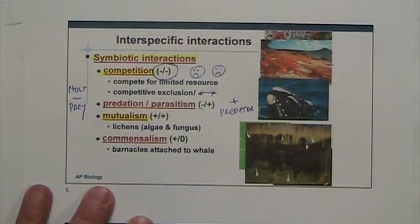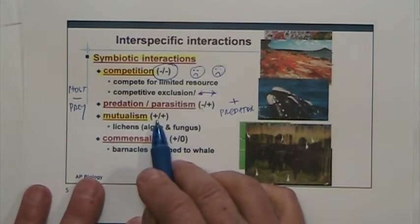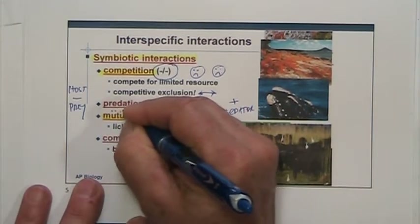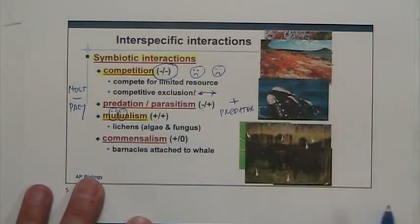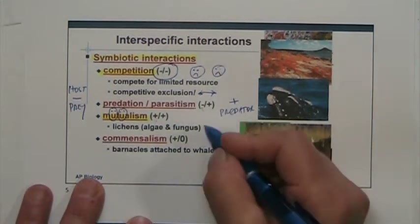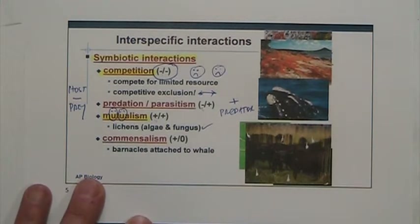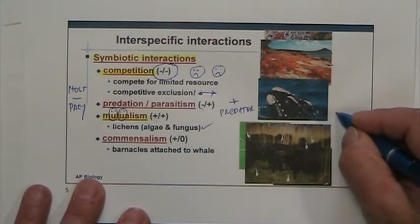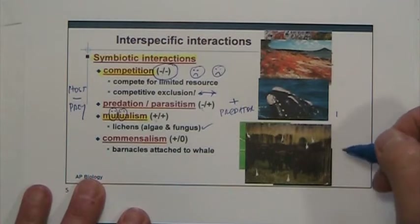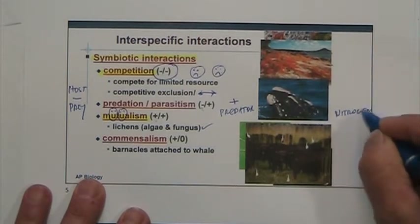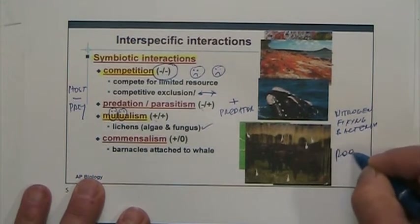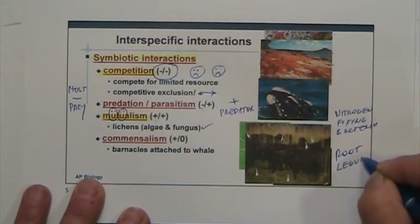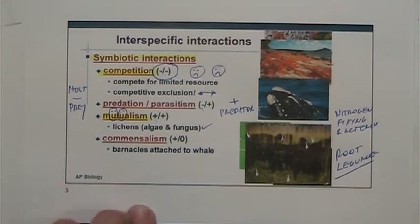Mutualism — both benefit from this interaction, this is one of the best ones. I remember that because you can make two happy faces with those U's, meaning that both of them are positive. One of the more classical examples of a mutualistic interaction is lichens, which is an association between an algae and a fungus. Or between the nitrogen-fixing bacteria in the soil and the roots of legume plants. Hopefully I'll have a chance to show you this in person in class.